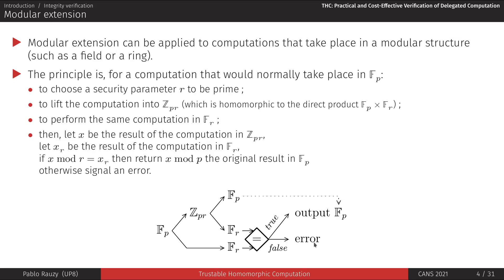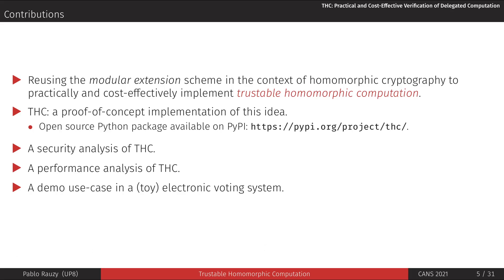What we did is realize that even though existing countermeasures using modular extension have all been mixing the big and small computations in their implementation — because they mostly targeted embedded systems — those computations are actually entirely independent and could be carried out on entirely different machines. Our modest contribution was to use this fact to port the modular extension scheme to delegated computation, in particular in the case of homomorphic cryptosystems. We provide a Python implementation called THC (Trustable Homomorphic Computation), publicly available from the Python Package Index.